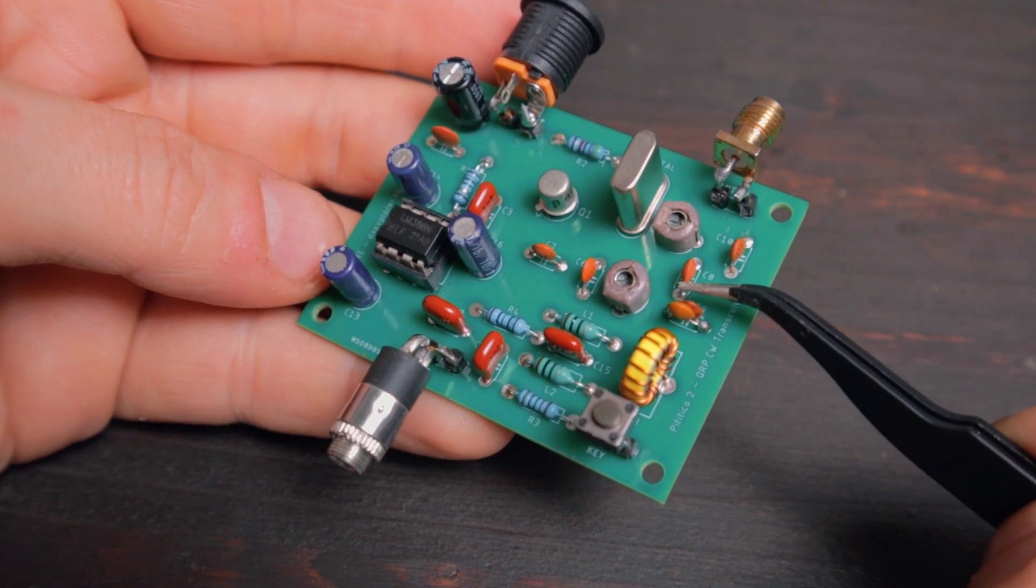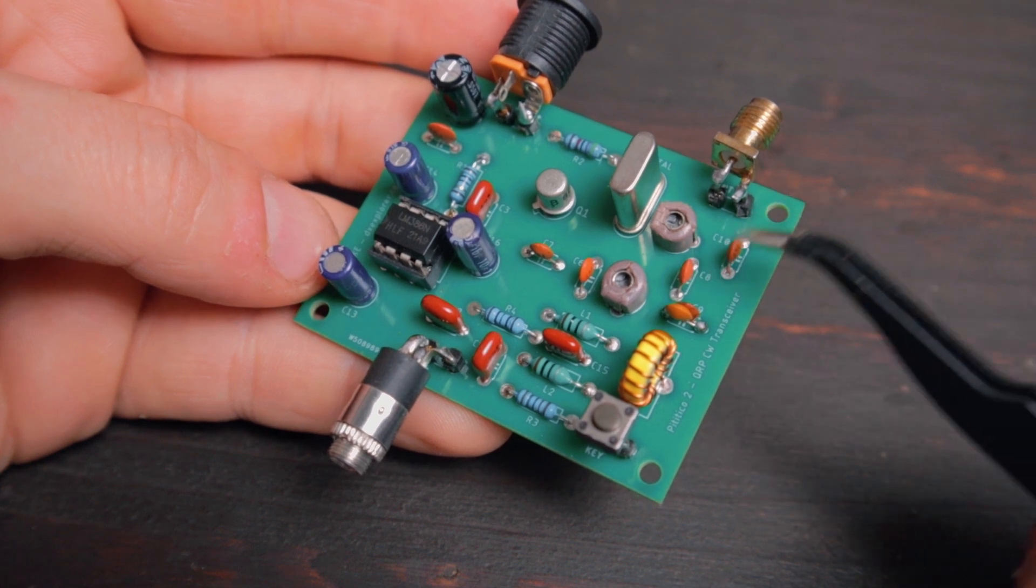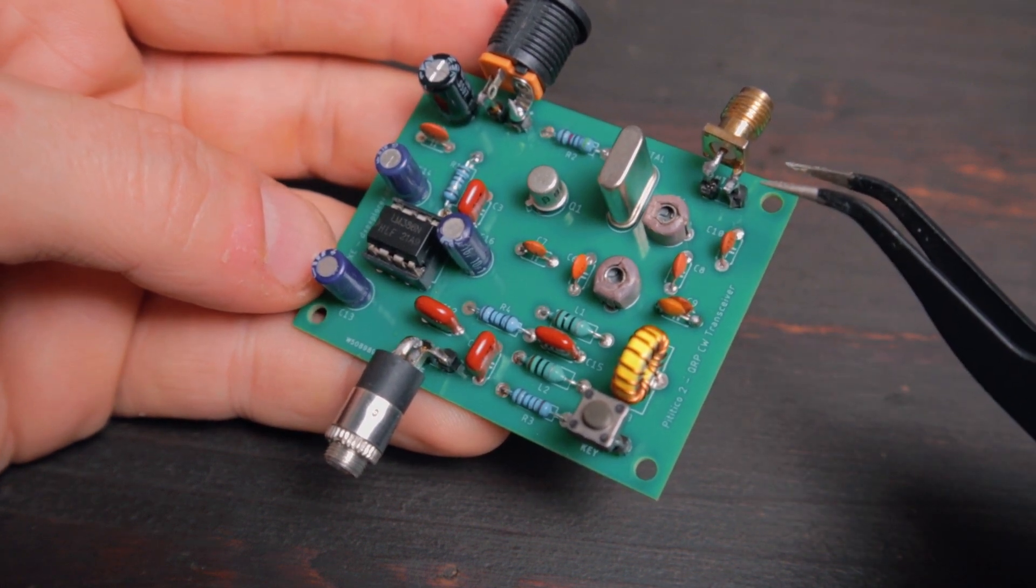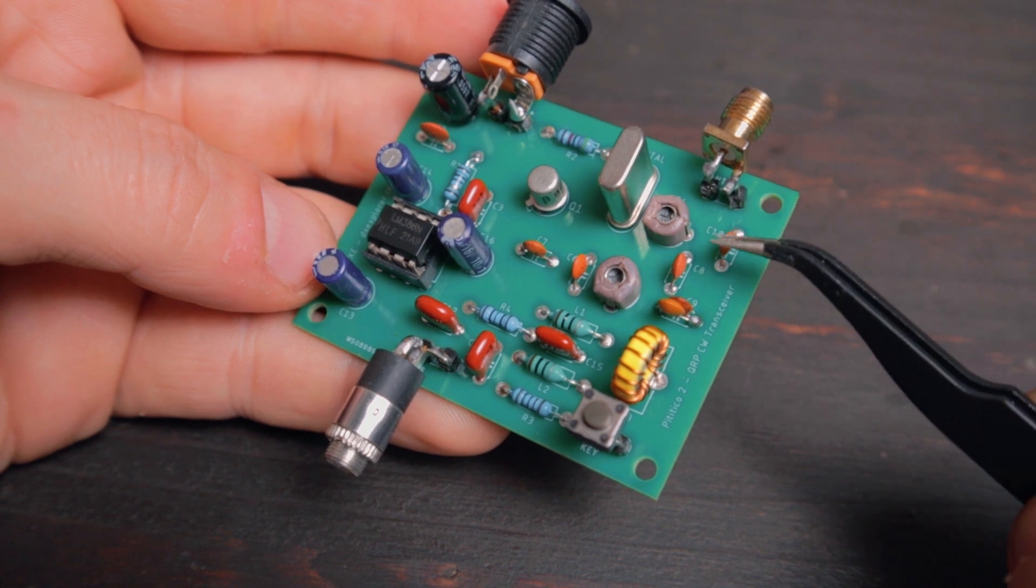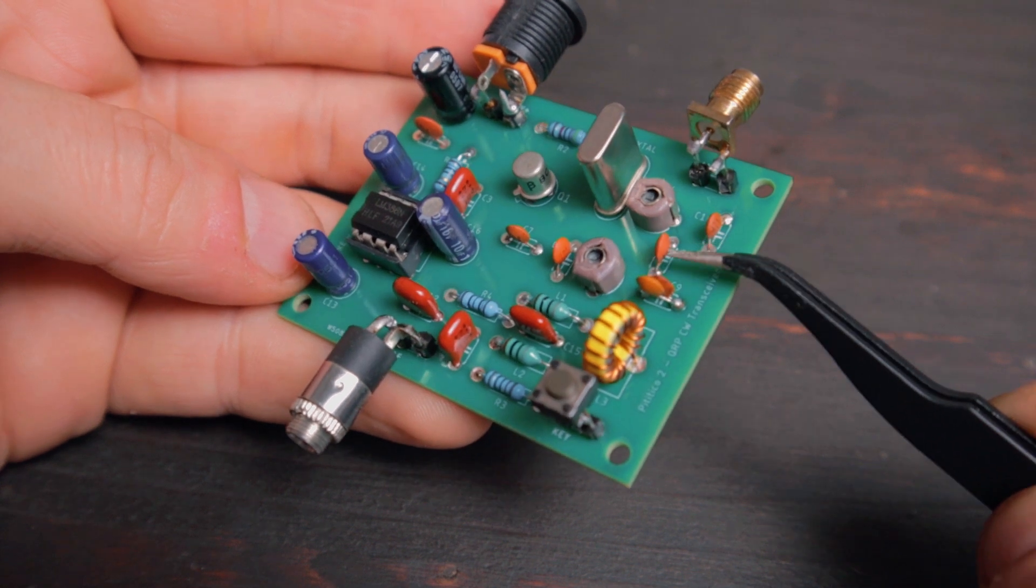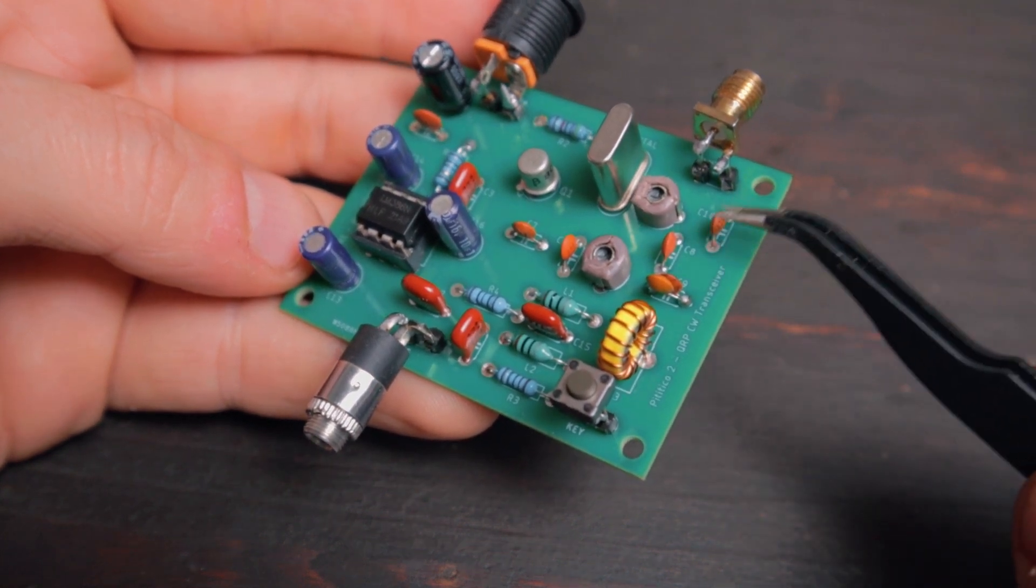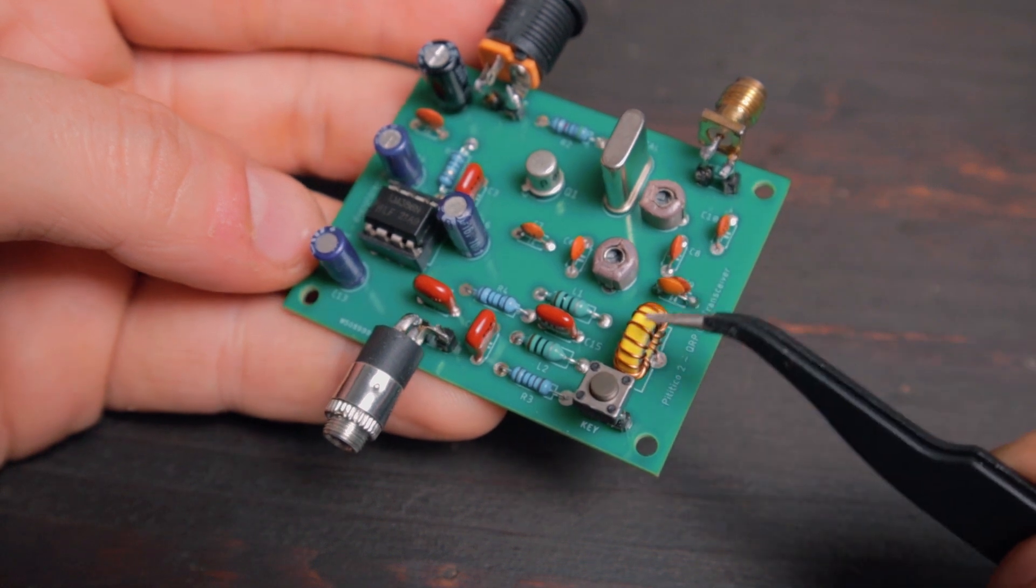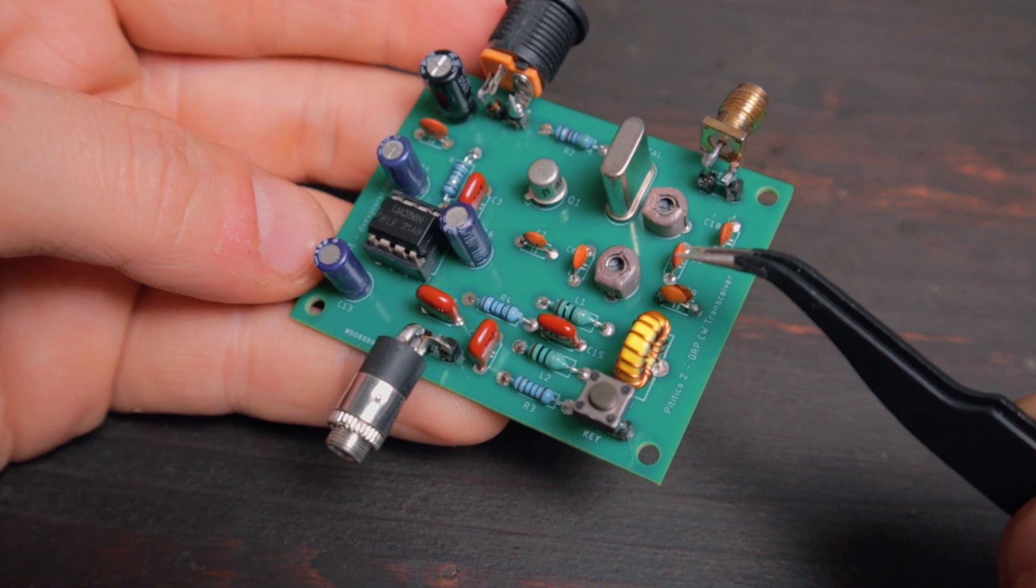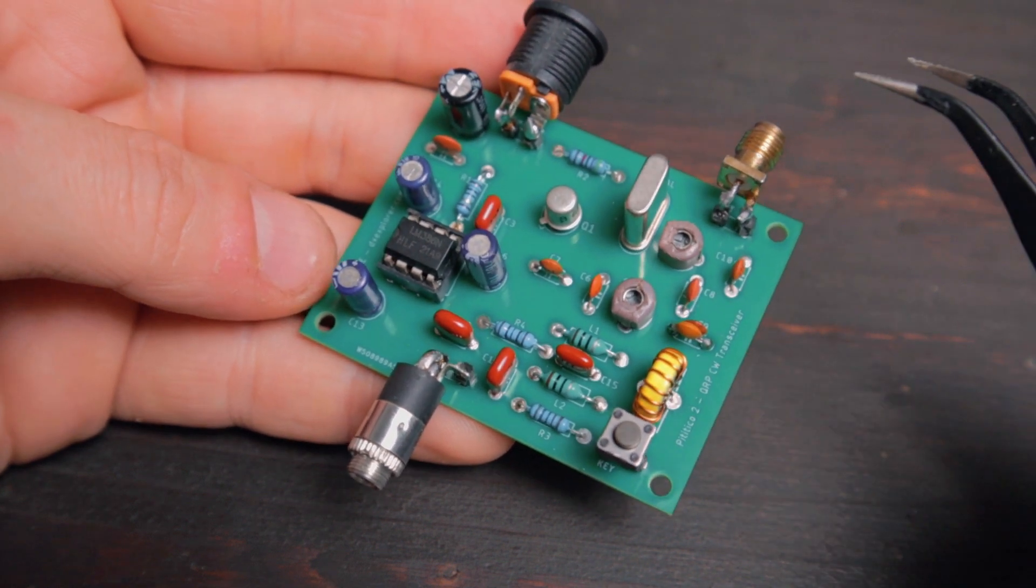And the 470 picofarad capacitors that I have on the filter on the output, they measured only 435 picofarads I believe. They're not the right value, that's what you get when you use cheap capacitors. But probably I'm going to replace this later on, but I'm going to do a test out of curiosity to see the power output that we get and also the harmonic suppression.